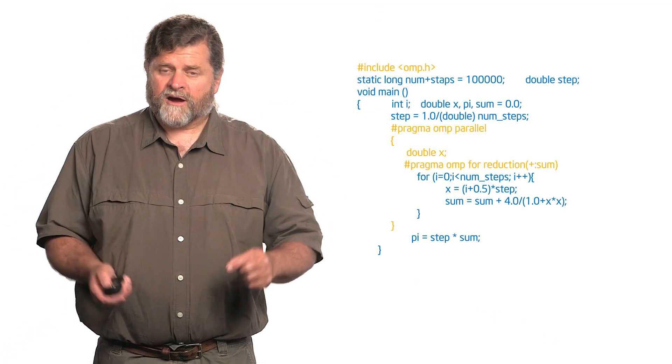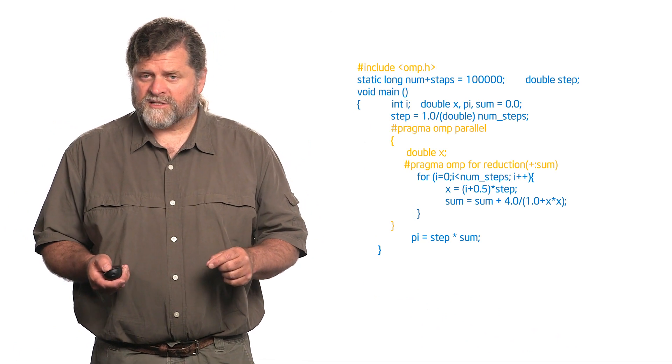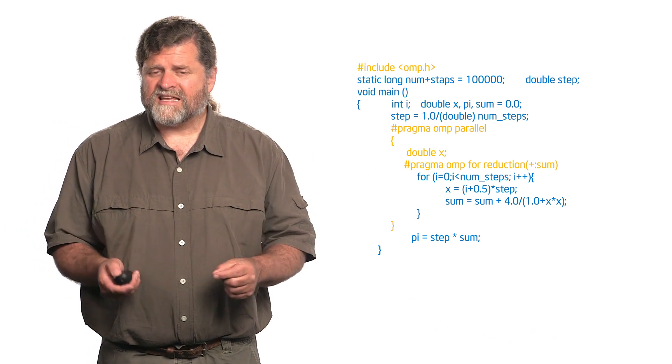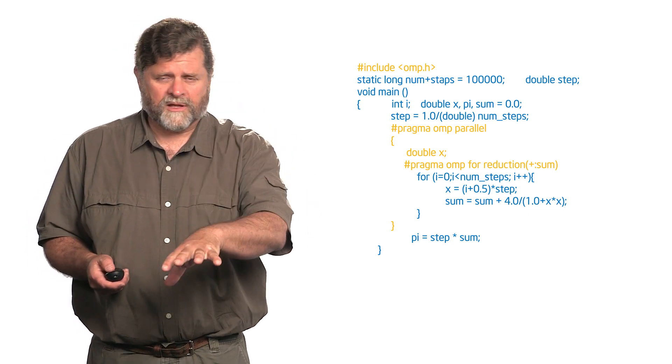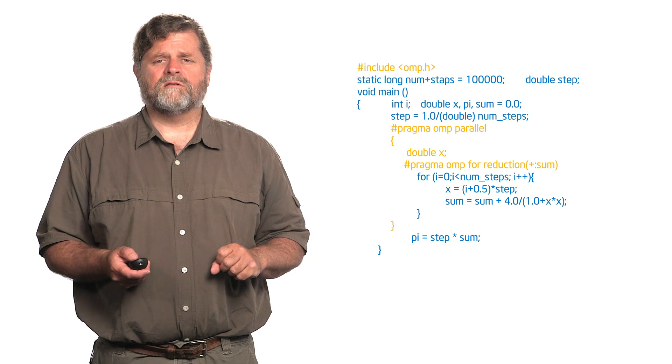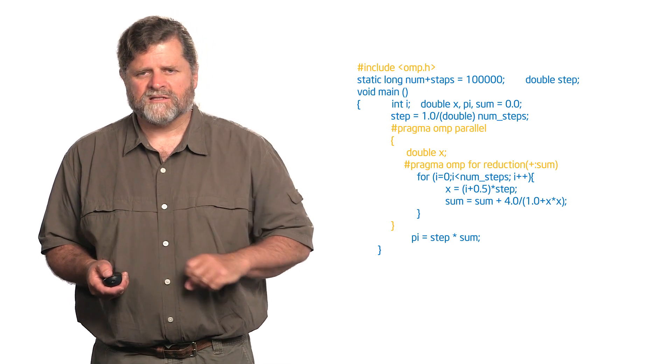I just declare my X. I still have to declare variables on the stack that need to be local to the thread. So pragma OMP parallel, then I complete, create that array, I'm sorry, I create that element X as the double.